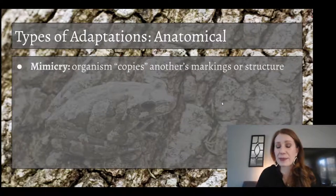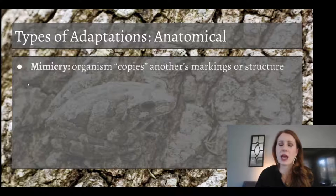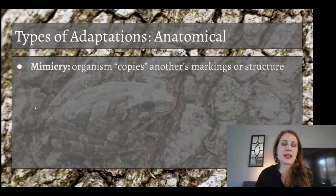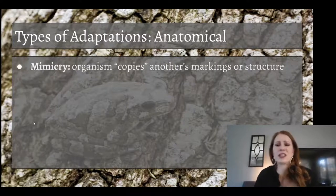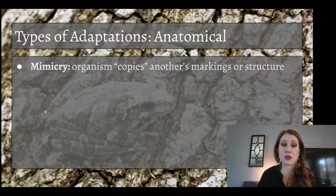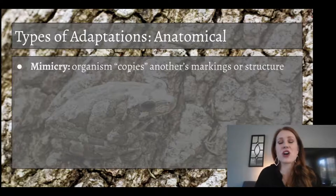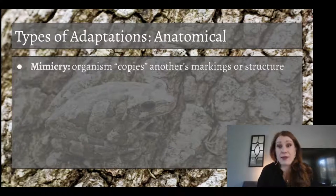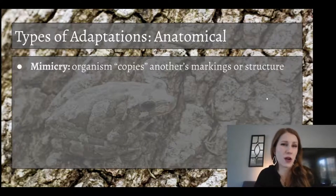Another type of anatomical adaptation is mimicry, and I think this is one of my favorite types — it's very cool. It's when an organism copies another's markings or structure. What it really is, is that a mutation caused a particular marking and then that marking was advantageous, so it kept happening and got passed on to the offspring of that organism.